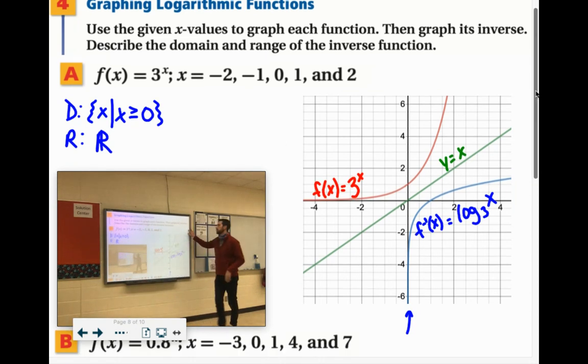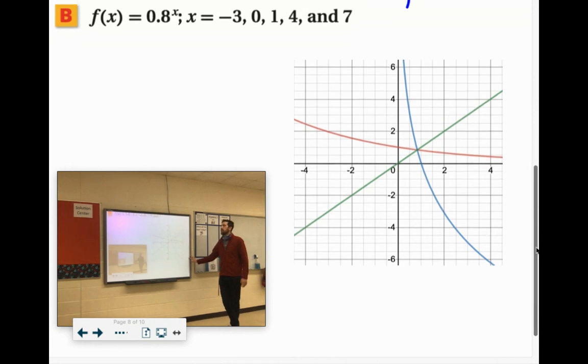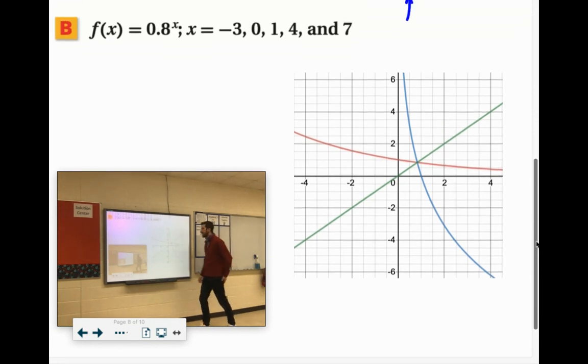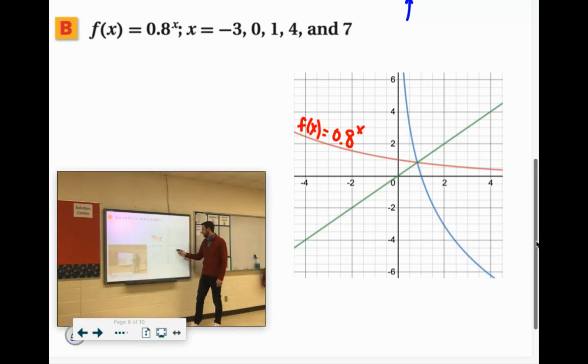So let's try another one out. Graph 4, f of x equals 0.8x. That is the red line. And then the blue line here would be the inverse of that. So f inverse of x equals log 0.8x.